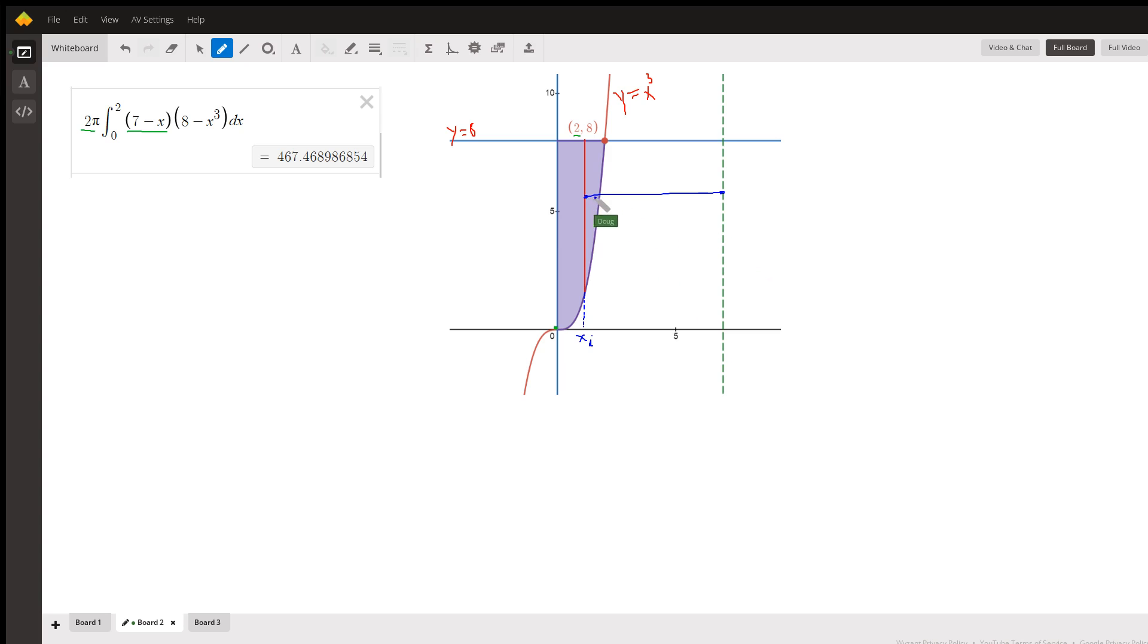So an expression for the length of that blue line is the x coordinate at the right, which is always seven, minus the x coordinate at the left, which is this x sub i. That's what this is right here, the average radius.